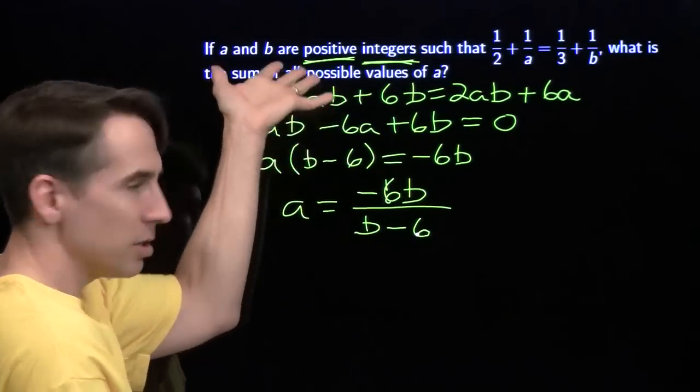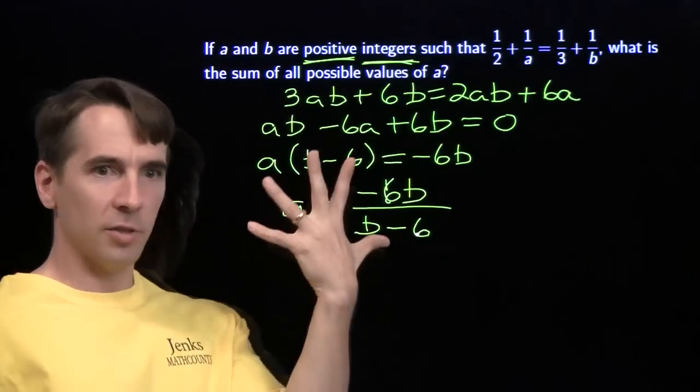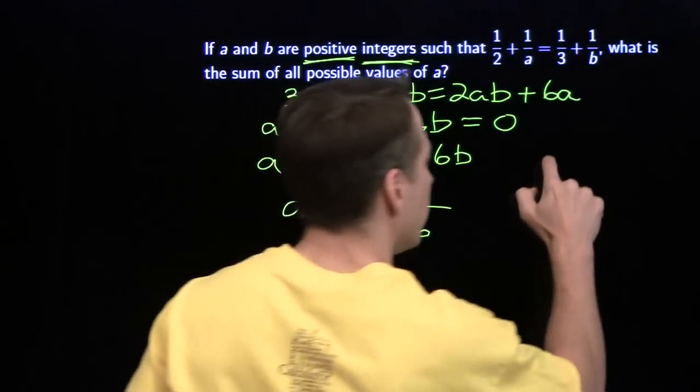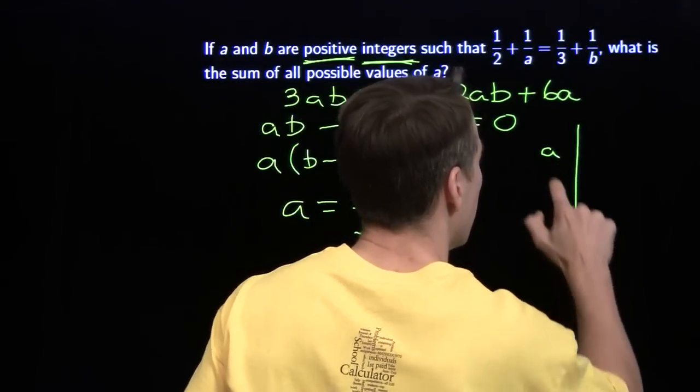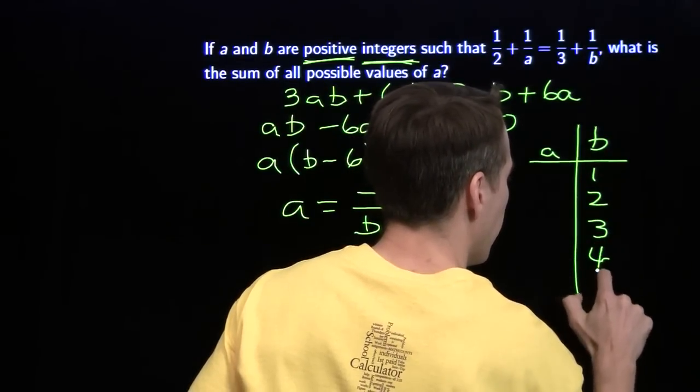So b, well, the only options are, since b has to be positive, are 1, 2, 3, 4, and 5. That's just 5 possibilities. We can just go ahead and check them. We'll check the 5 possibilities for b.